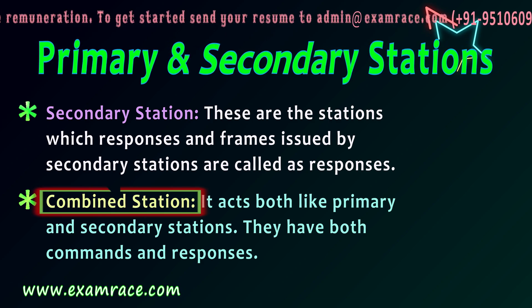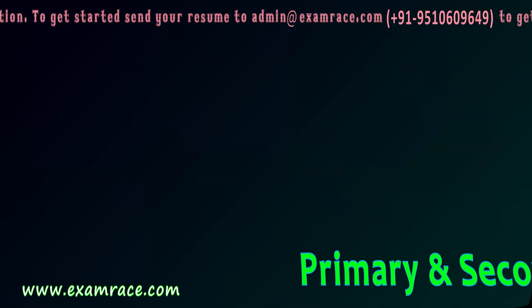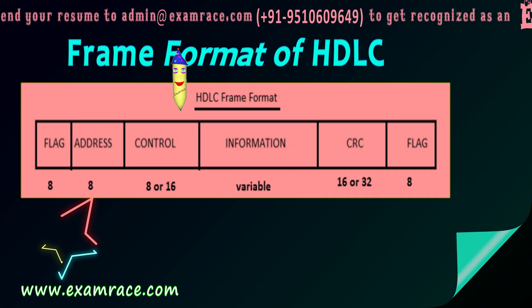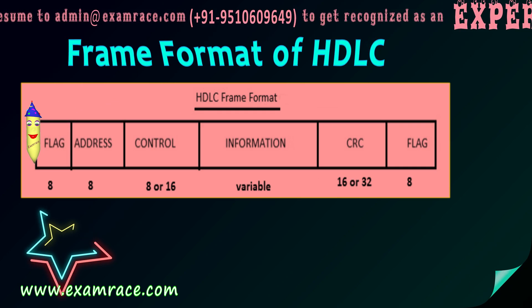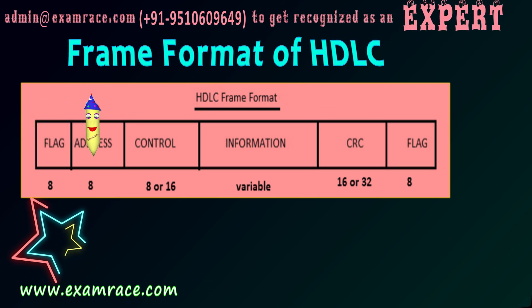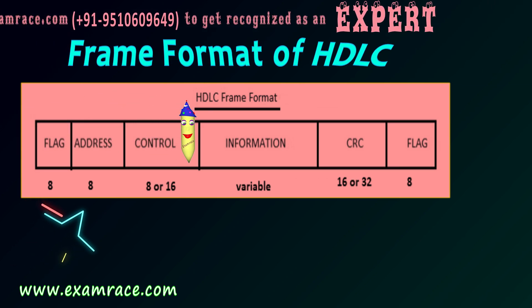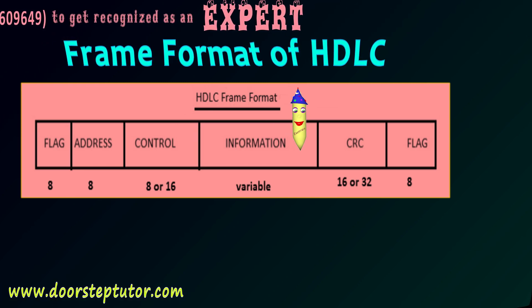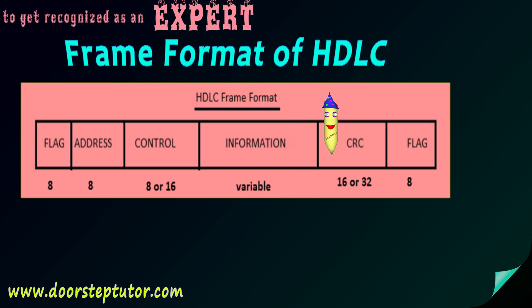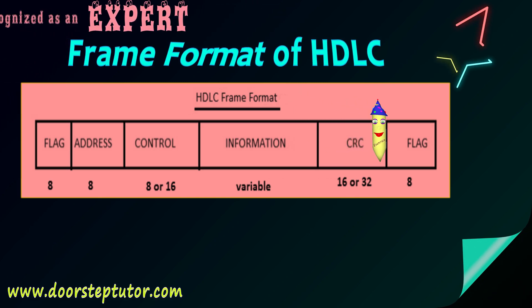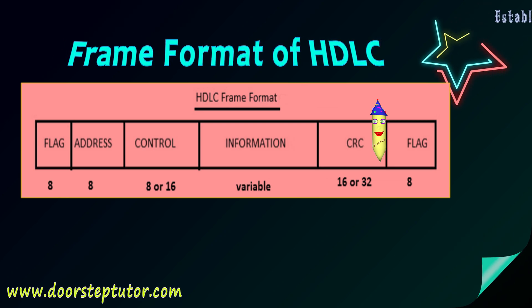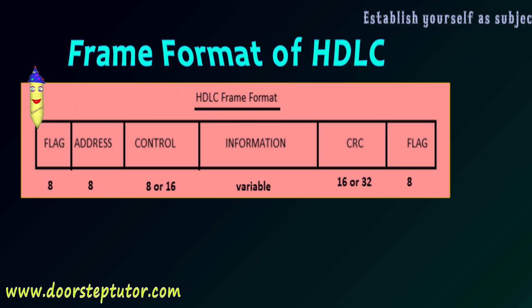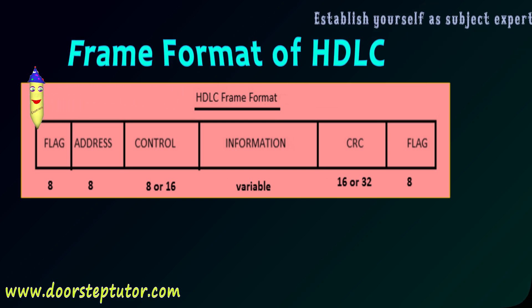Now let's look at the HDLC frame format. This diagram represents the frame format. First we have the flag, which is 8 bits. Then the address field, also 8 bits. Then the control field, which can be 8 or 16 bits. Then the information field, which is of variable length depending on the requirement. Then we have the CRC — cyclic redundancy check — for error checking. Finally, another 8-bit flag at the end.